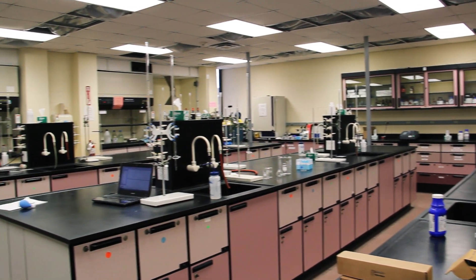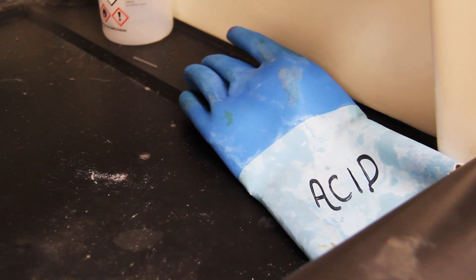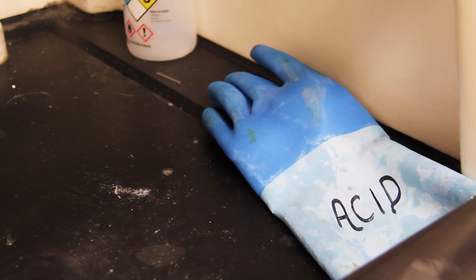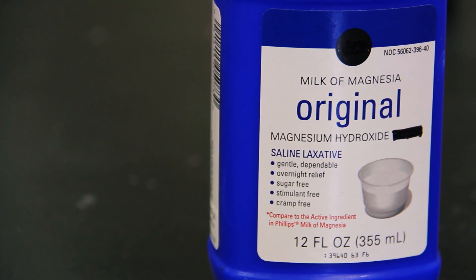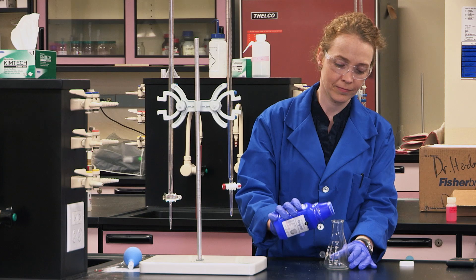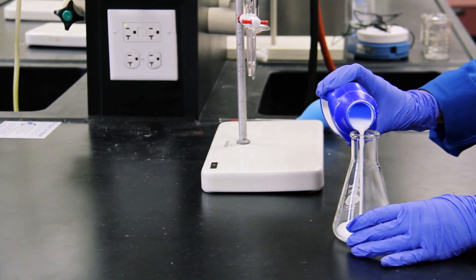Titrations are a quantitative analytical technique to measure the concentration of an analyte. Suppose you want to measure the amount of base in milk of magnesia. The analyte is the magnesium hydroxide and the milk of magnesia is the sample matrix.